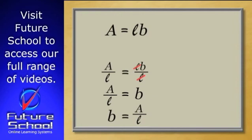Now just turn the equation around and you've got a new subject. B equals A over L. It's that simple. B is now the subject of the equation.